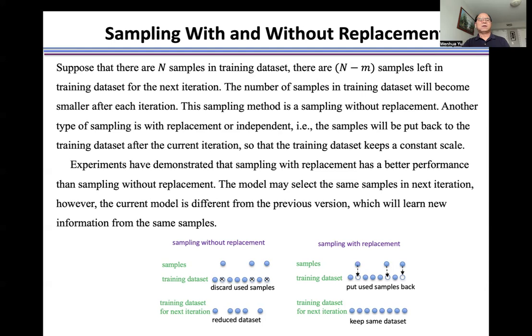Another type of sampling is with replacement or independent. Namely, the samples will be put back to the training dataset after the current iteration, so that the training dataset keeps a constant scale.